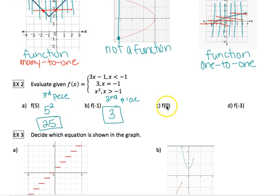Alright, c, f(0), so 0, it's not less than, it's not equal, it is greater, 0 is greater than negative 1, so that's the third piece, so 0 squared, which is 0.